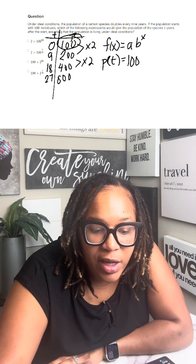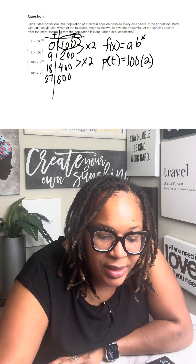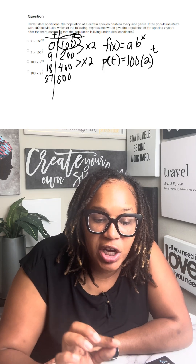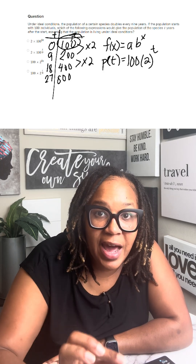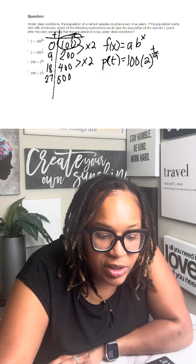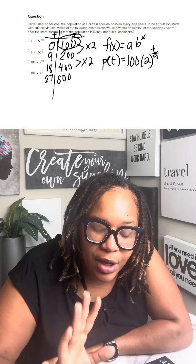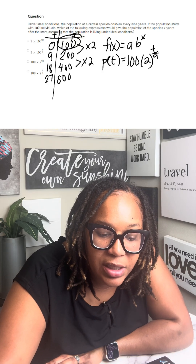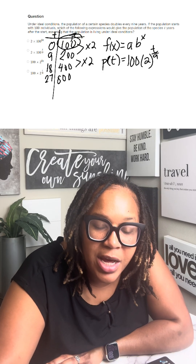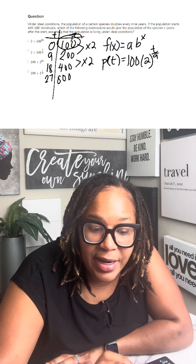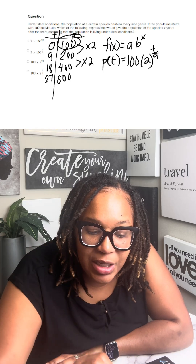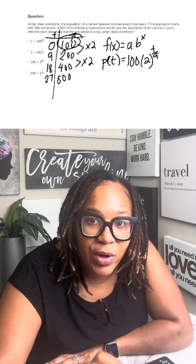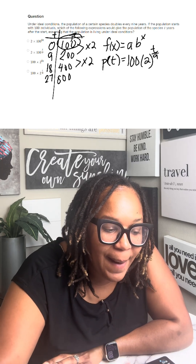Our growth factor is two, and our X is T. But remember, it's not changing every year — it's changing every nine years. So what we need to do is divide that T by nine. How do I know that? So if I look at my chart over here, when I plug in zero for T, I get 100 times two to the zero divided by nine. Zero divided by nine is zero, two to the zero is one, 100 times one is 100.